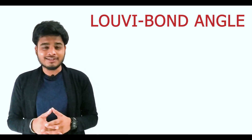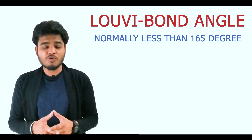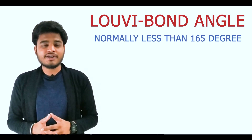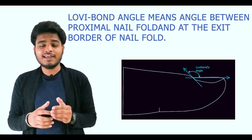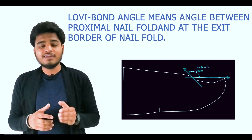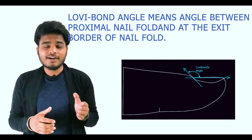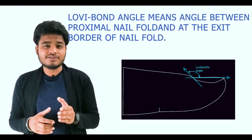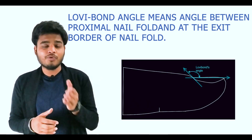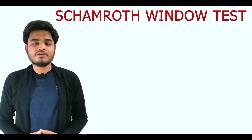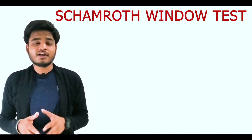There will also be changes in the hyponychial angle, also known as the Lovibond angle. Normally, the Lovibond angle is less than 165 degrees, but due to increased convexity in the nail bed, the Lovibond angle is distorted and its range goes up to 180 degrees or more.